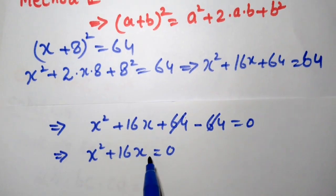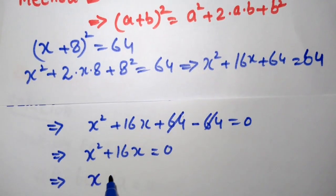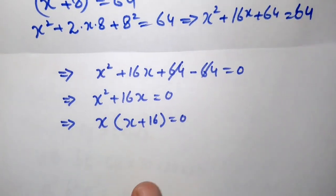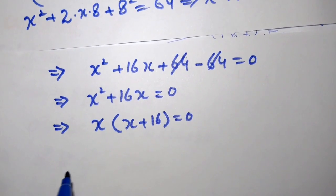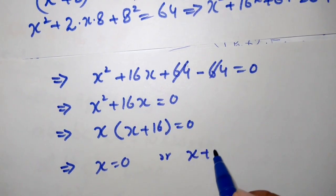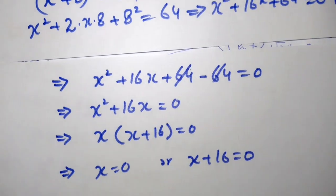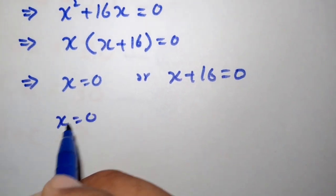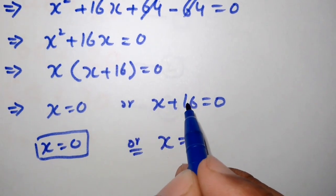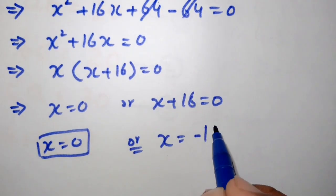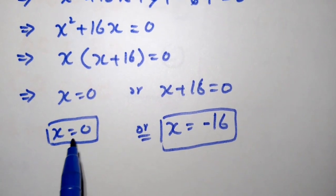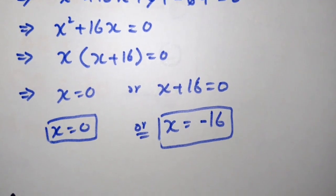We factor out x: x(x + 16) = 0. Applying the zero product rule gives x = 0 or x + 16 = 0, so x = 0 or x = -16. Through Method 2 we obtain the same values as Method 1: x = 0 and x = -16. Now we check our answer.